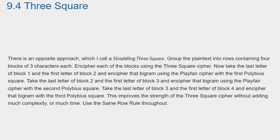There is an opposite approach, which I call a Straddling Three Square. Group the plaintext into rows containing 4 blocks of 3 characters each. Encipher each of the blocks using the Three Square cipher. Now take the last letter of block 1 and the first letter of block 2 and encipher that bigram using the Playfair cipher with the second Polybius square.